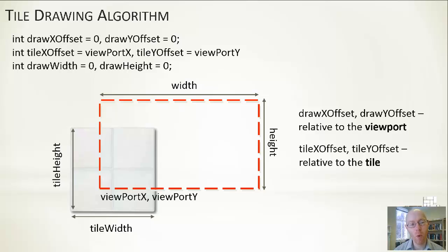tileXOffset and tileYOffset are relative to the tile. They specify the location within the source tile that we commence our copying from, the bottom left location relative to the source tile, the source image. You can see at the start, we initialize those to the X and Y location as to wherever the viewport is relative to our source image.